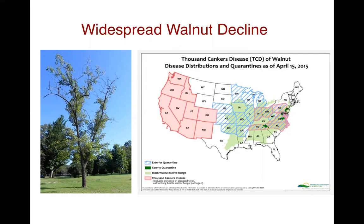It wasn't until the beetle formed an association with Geosmithia morbida that it was able to start to cause TCD and spread rapidly throughout the west. There's genetic evidence suggesting that Geosmithia morbida is a long-established species rather than a recently introduced exotic. Among walnut species, black walnut is the most susceptible to TCD.